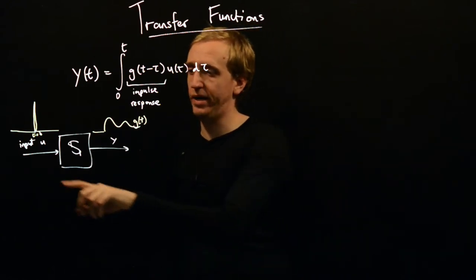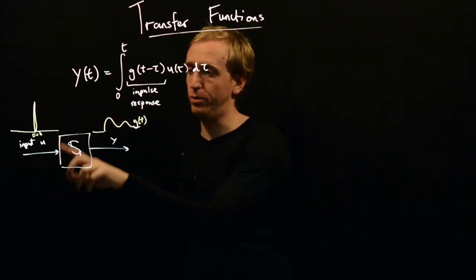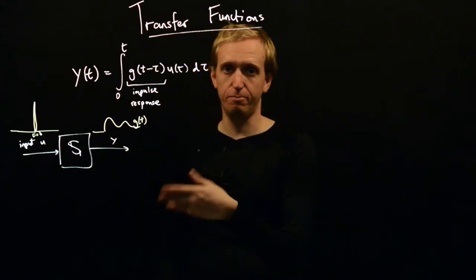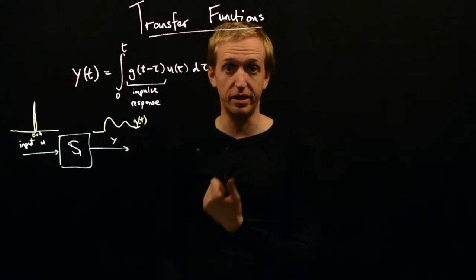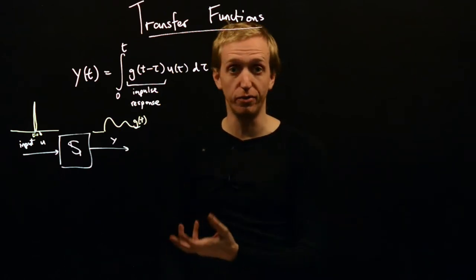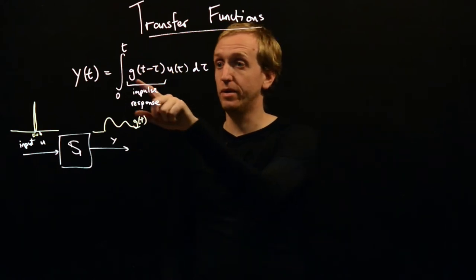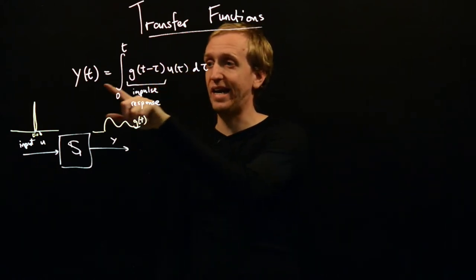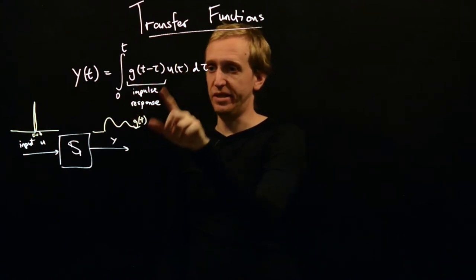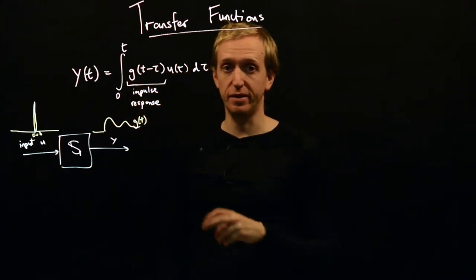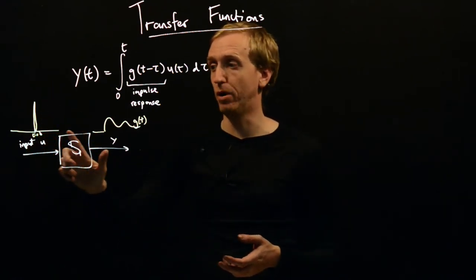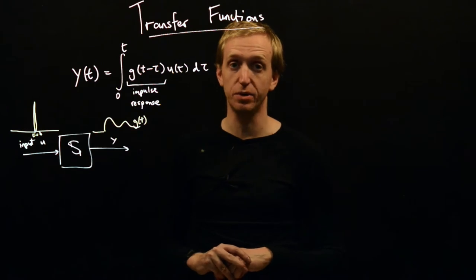If you remember before we had an input-output system, so it took an input u, has an output y, and provided the system was linear, time-invariant, and causal, it could be described by a convolution system. We could get any output y by convolving a given input with this thing called the impulse response, and the impulse response was the response of the system to this impulsive input at time t equals zero.